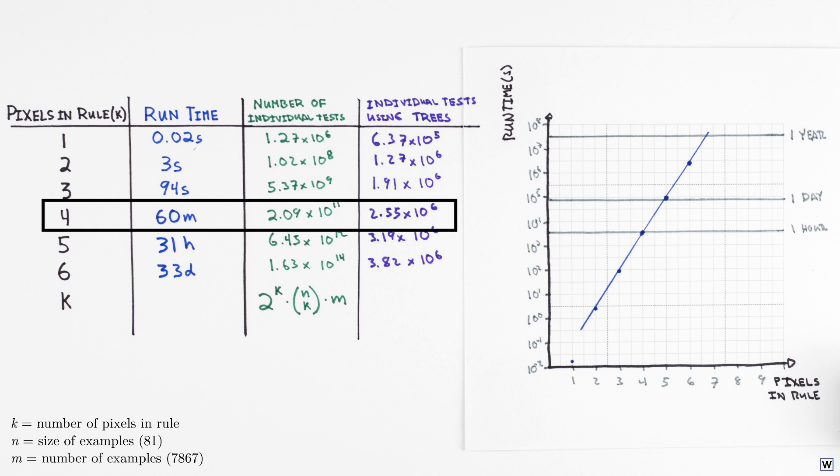In the 4 pixel case, where our brute force approach requires 209 billion individual tests, decision trees will require just 2.6 million, making this decision tree a staggering 82,000 times faster than brute force.